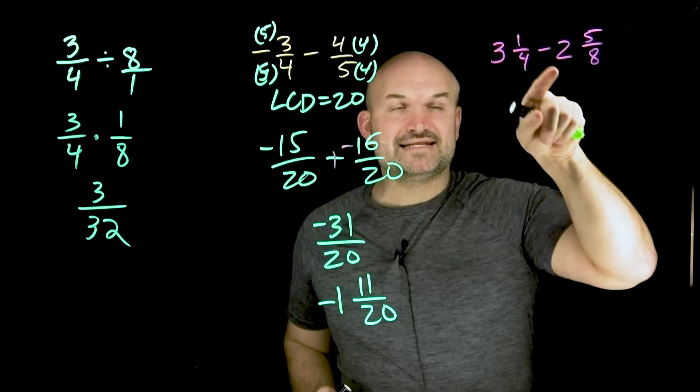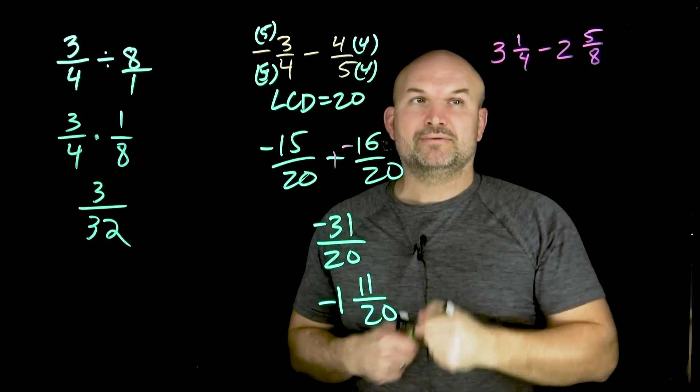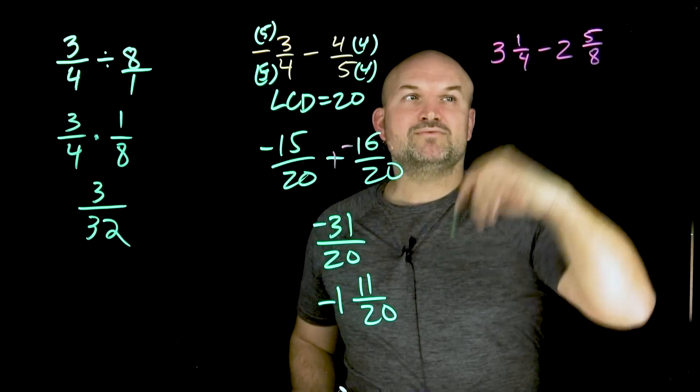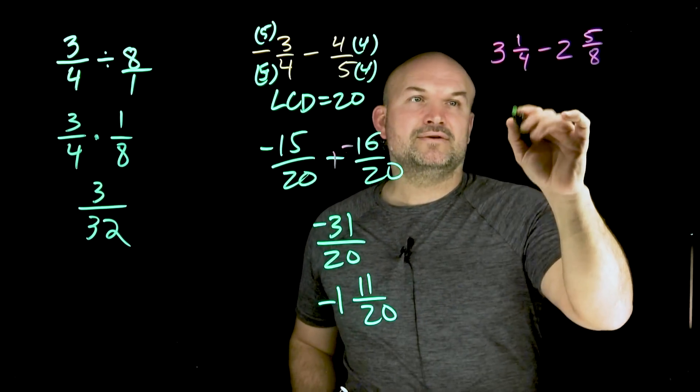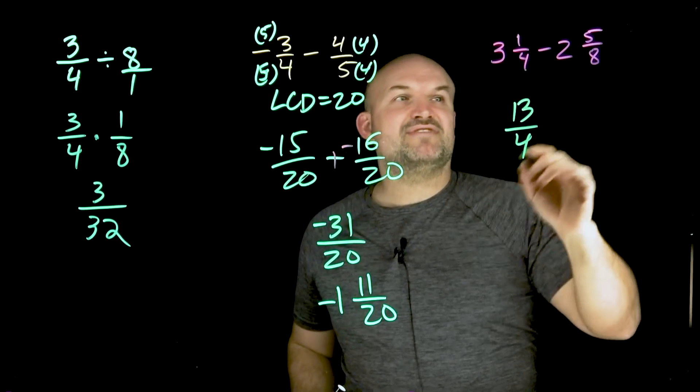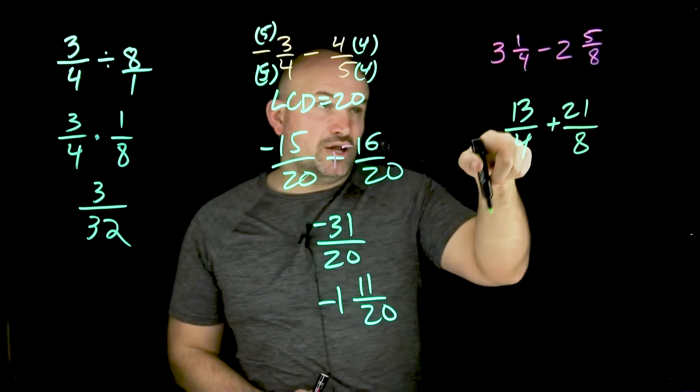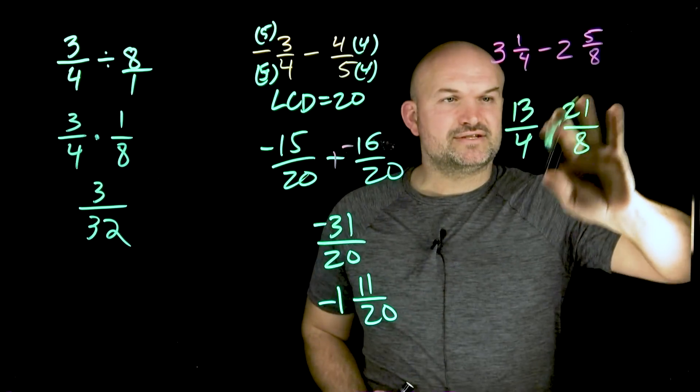To rewrite something as a mixed number into improper fraction, you're just going to take your denominator, multiply by your whole number, add to the numerator. Four times three is 12. 12 plus 1 is going to be 13. Eight times two is going to be 16. 16 plus 5 is going to be 21. All right. Now all I simply need to do, oh, again, remember this is subtraction. Sorry about that.